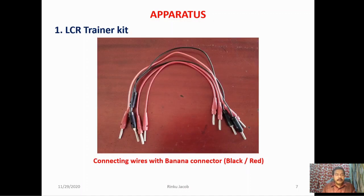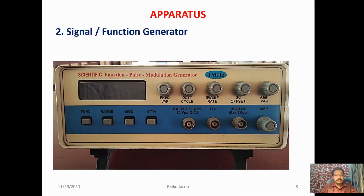These are the connecting wires used in the LCR trainer kit. The second device is a signal or function generator, which is basically an oscillator that produces different types of electronic signals like sine, square, triangular, pulses, etc.